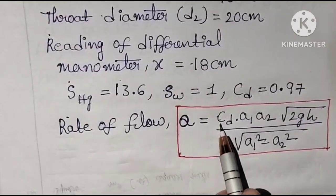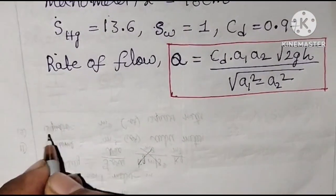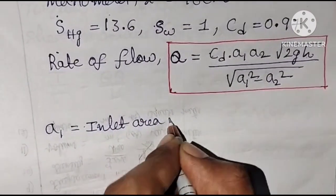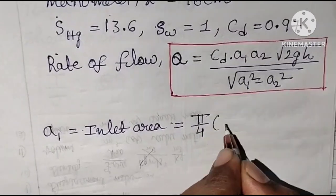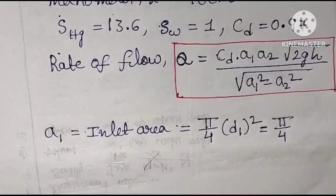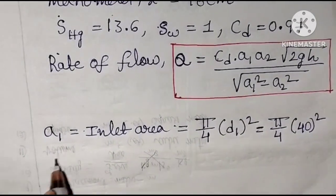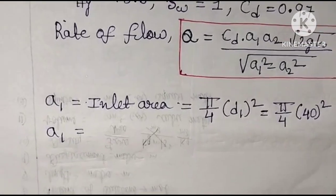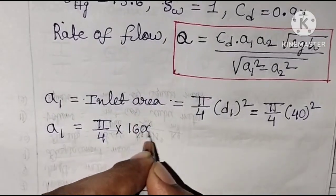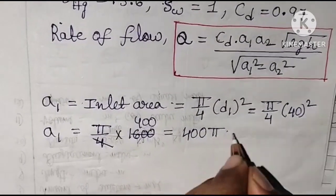CD value is known. Now let us find A1 and A2. A1 is the inlet area, calculated as π/4 × D1². With D1 = 40 cm, A1 = π/4 × 40² = π/4 × 1600 = 400π square centimeters.